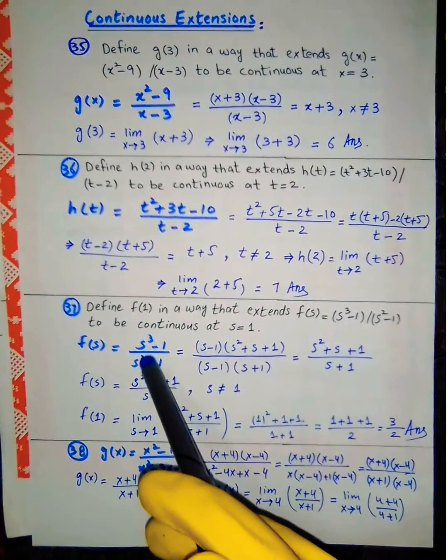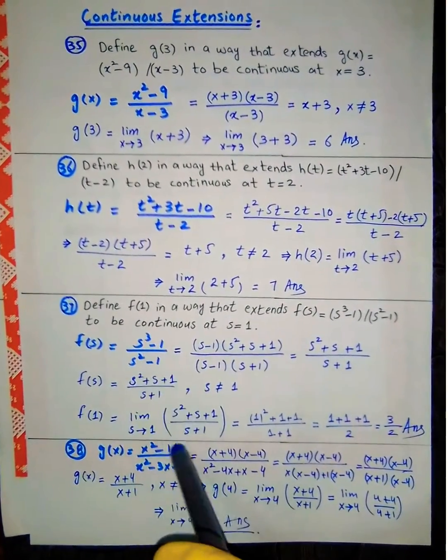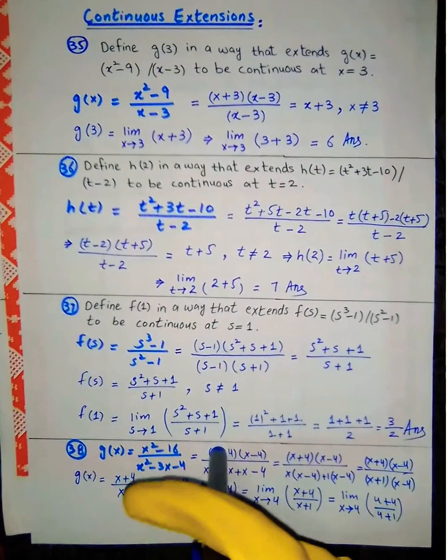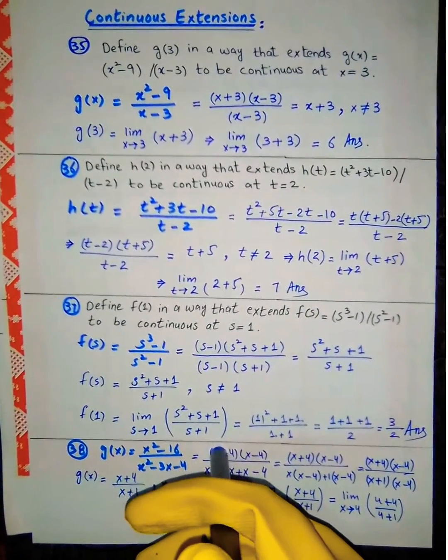The next part involves a function of the form (s³ - 1), using the a³ - b³ difference of cubes formula.